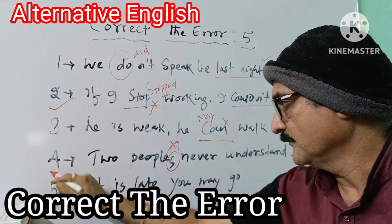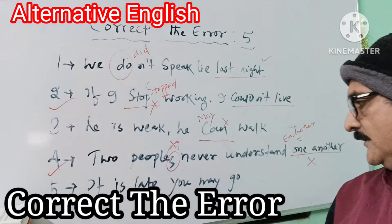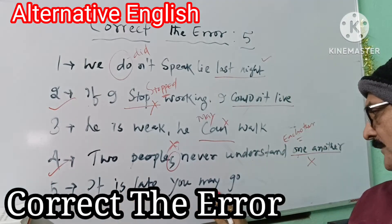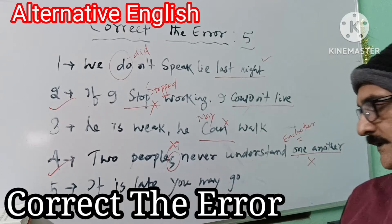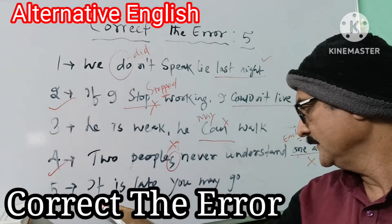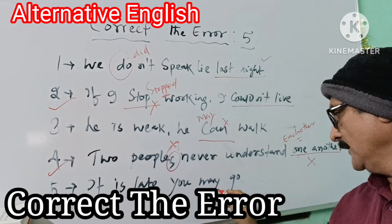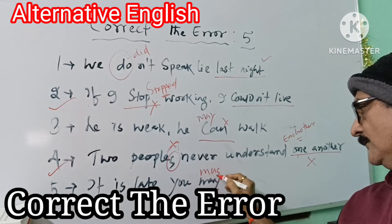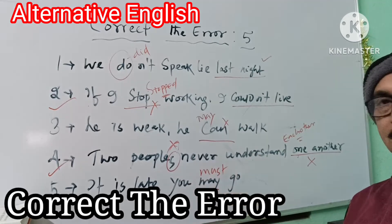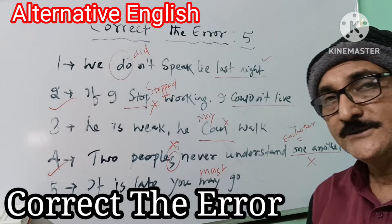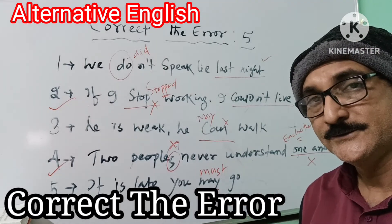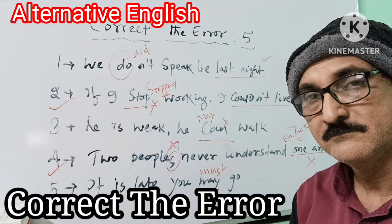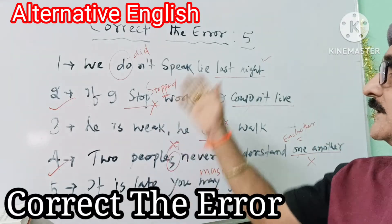Question five: 'It is late, you may go.' The correction is: 'It is late, you must go.' This is an obligation or necessity, so we use 'must' — 'must' indicates compulsion or obligation.